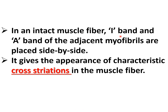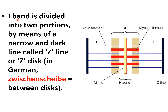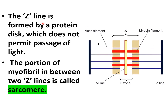In an intact muscle fiber, the I band and A band of adjacent myofibrils are placed side by side, giving the appearance of characteristic cross-striations. The I band is divided into two portions by a narrow dark line known as the Z line — from the German 'Zwischenscheibe,' meaning 'between disc.' The Z line is formed by a protein disc that does not permit passage of light. The portion of the myofibril between two Z lines is known as the sarcomere.